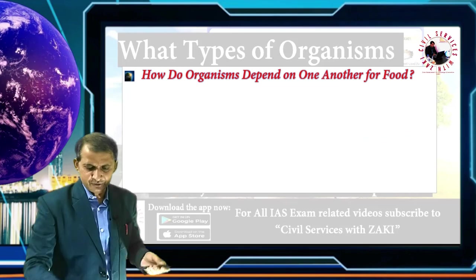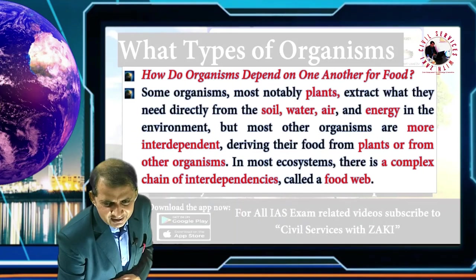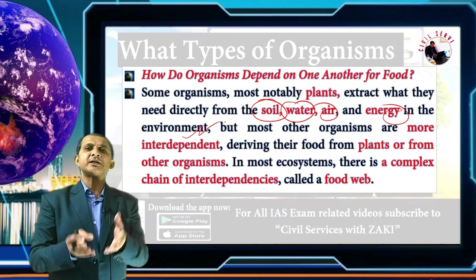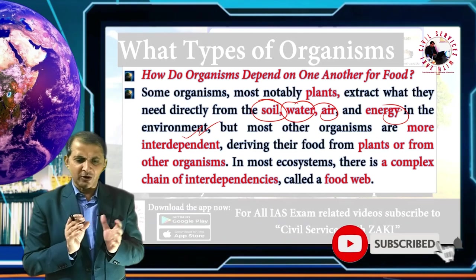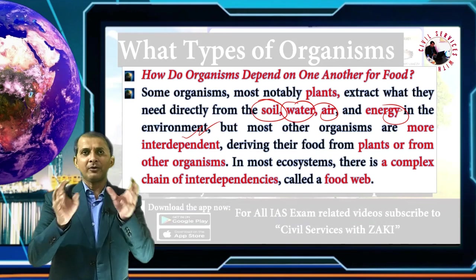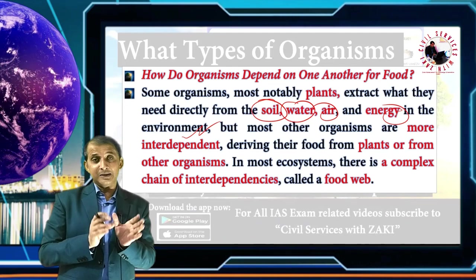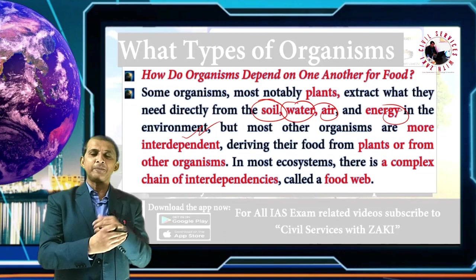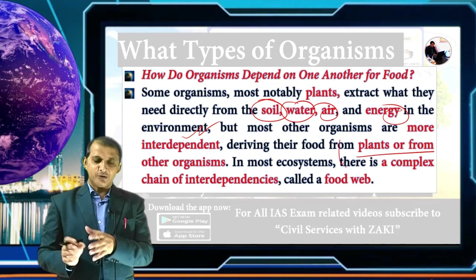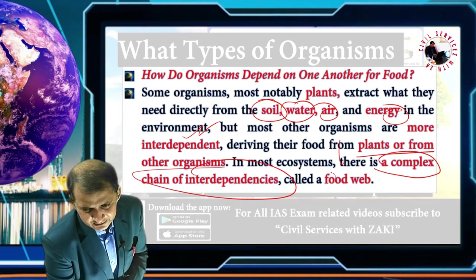Some organisms, most notably plants, extract what they need directly from the soil, water, air, and solar energy through photosynthesis. Most organisms, however, are more interdependent. Animals derive their food from plants, and other organisms drive food from other organisms. In most ecosystems there is a complex chain of interdependency, which we call a food chain.